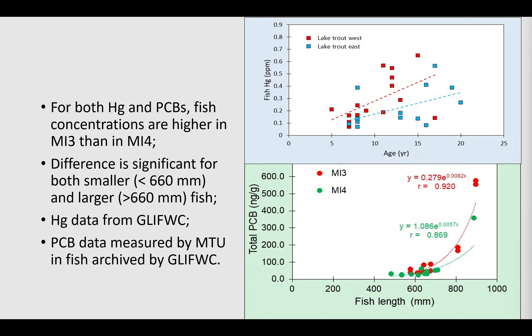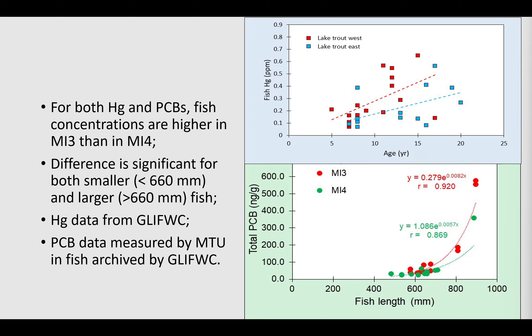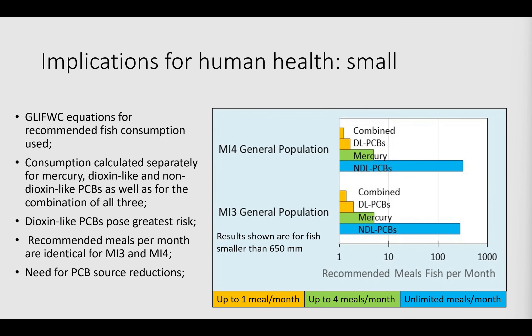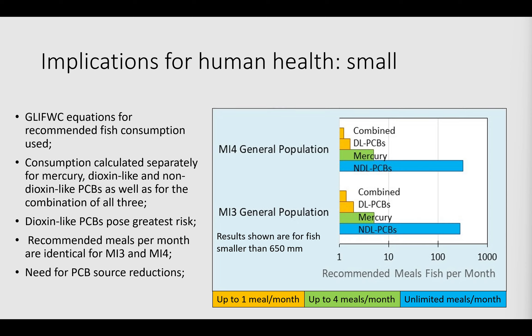Our approach here was to first try to verify that the spatial patterns we observed are, in fact, real by assembling all the measurements that we could find and making additional measurements. We gathered all the agency data available that was collected in a similar fashion. We used Glifwic's mercury analyses and made additional measurements ourselves, concentrating on the two sides of the Keweenaw Peninsula, because concentrations are hugely different on the west side in the MI3 management unit than on the east side in the MI4 management unit. When we assembled those measurements, we found that yes, that pattern seems to hold up.